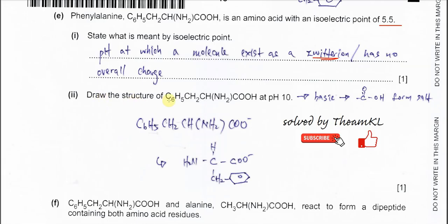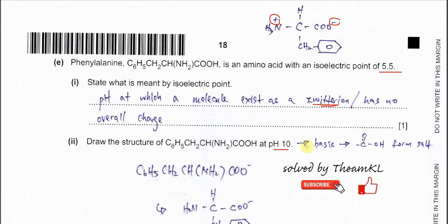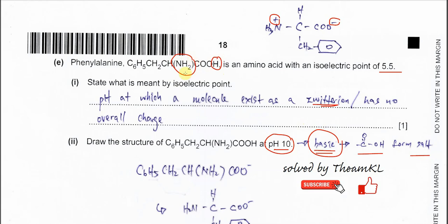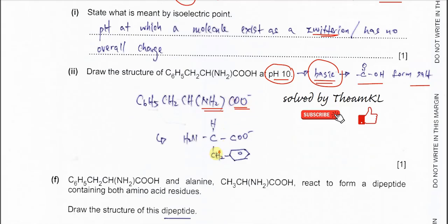Part E(2): Draw the structure of phenylalanine at pH 10. At pH 5.5 it exists as the dipolar ion, but at pH 10 the conditions are basic. In basic conditions, the carboxylic acid group reacts with the extra hydroxide to form COO⁻ (the carboxylate), while the amine group stays as NH2. So the NH2 is unchanged and the COOH becomes COO⁻.